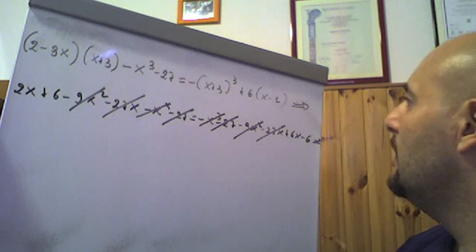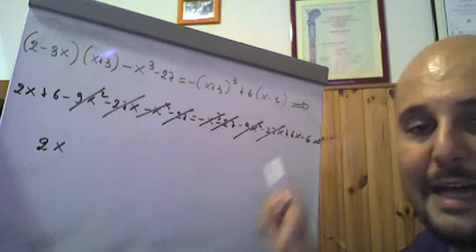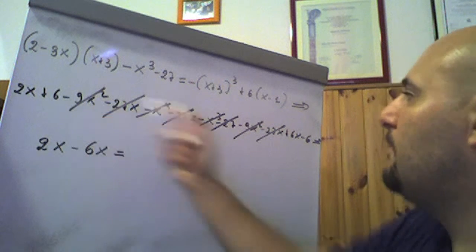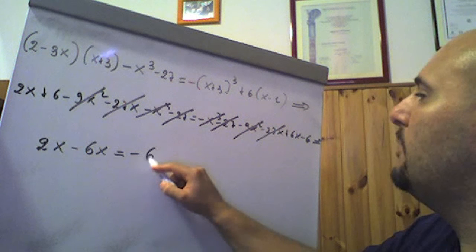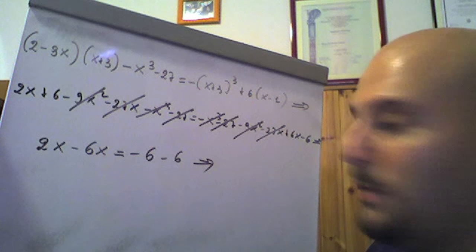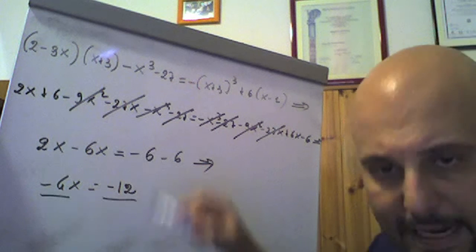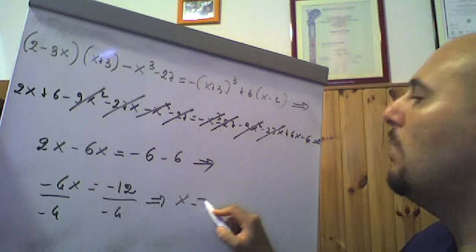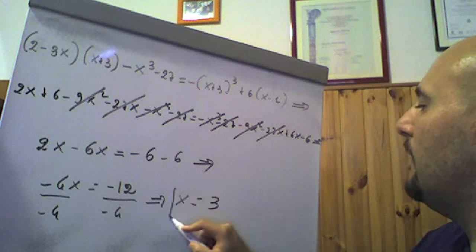By the cancellation rule, −x³ and −x³ cancel, −27 and −27 cancel, −9x² and −9x² cancel, −27x and −27x cancel. What remains: we keep 2x on the left, transport 6x from right to left becoming −6x, and transport 6 from left to right becoming −6. Summing: 2x − 6x = −4x = −6 − 6 = −12. Dividing both members by −4: x = −12/(−4) = 3.